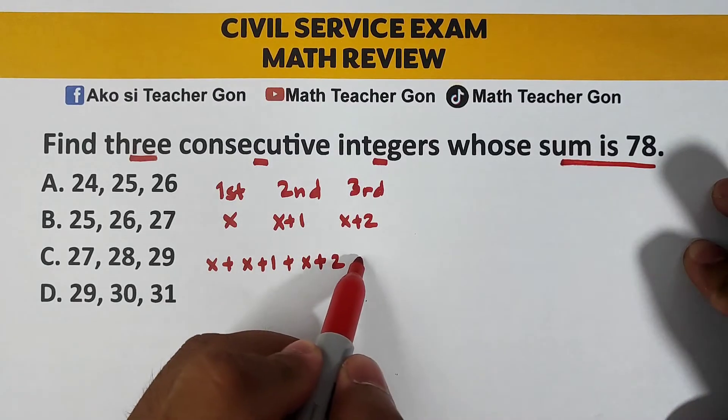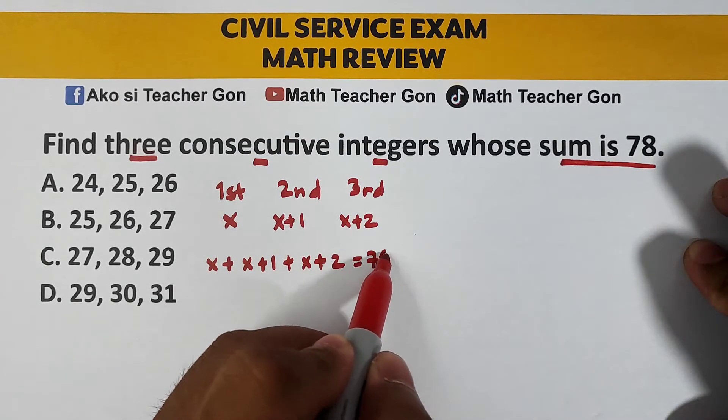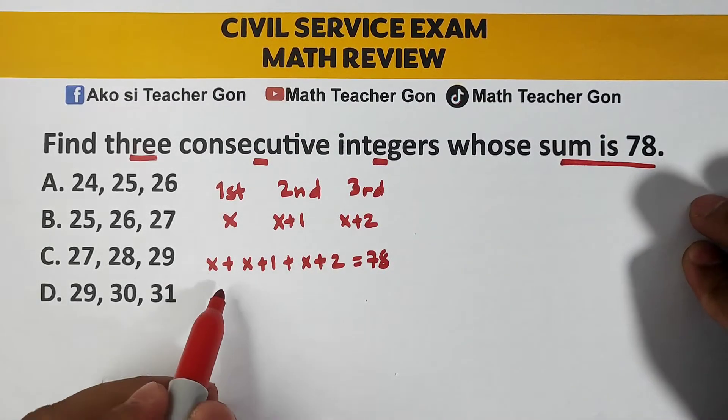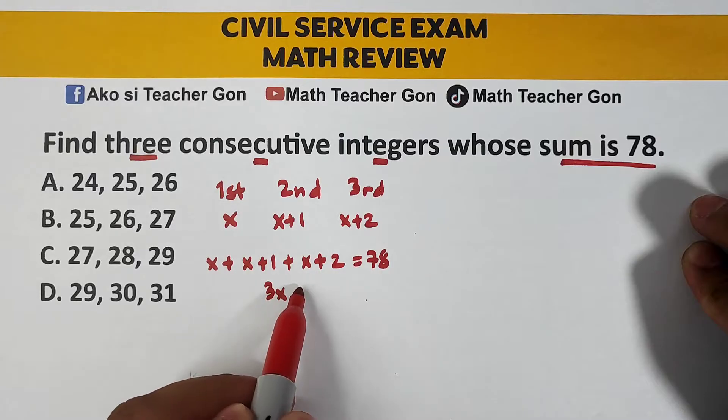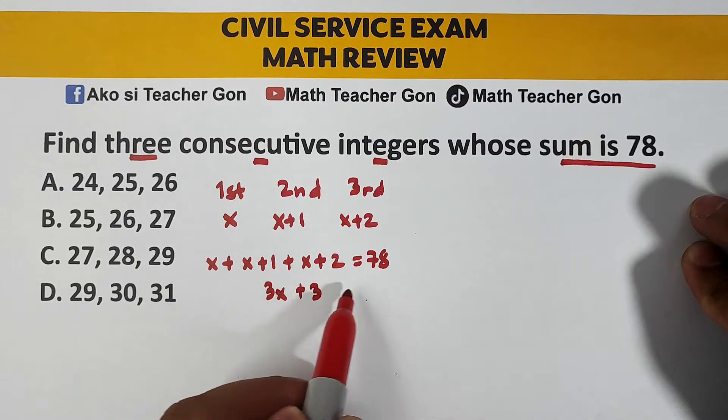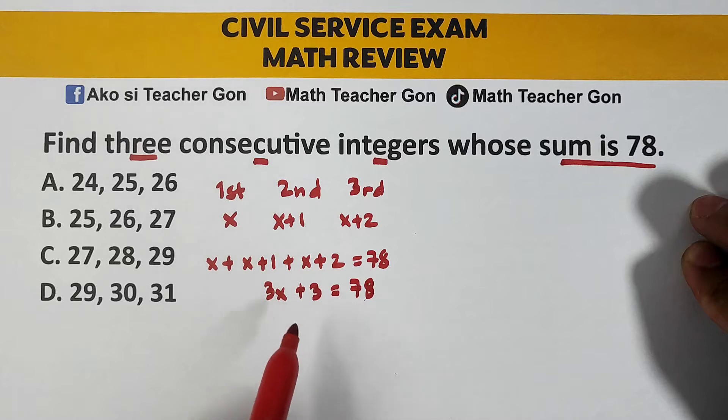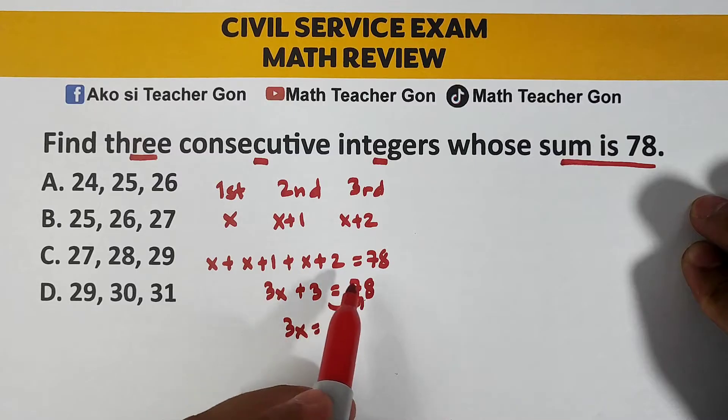and their sum is 78. Add natin itong x plus x plus x, that is 3x. Then your 1 plus 2 is plus 3 equals 78. Transpose natin to the other side yung 3, it will become 3x equals 78 minus 3, and that will give us 3x equals 75.